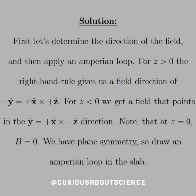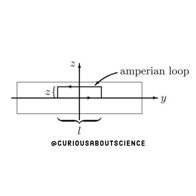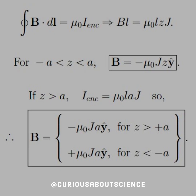We know that we have plane symmetry, so we can draw an Amperian loop in the slab, which is what we see here. We have a cross section in the xy plane, and the Amperian loop goes up a height of z and across a length l. We can flip that for underneath, where z is less than 0. For our general case, the Amperian loop yields B·l equal to mu-naught times l times z times j.